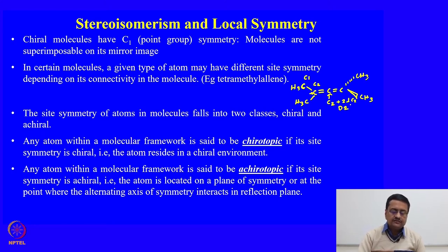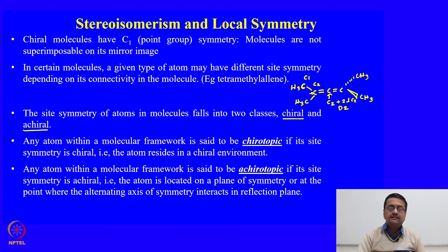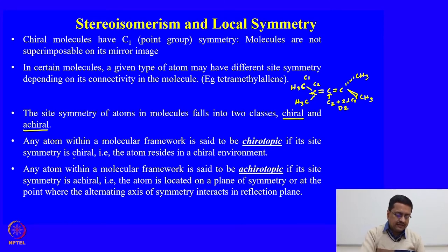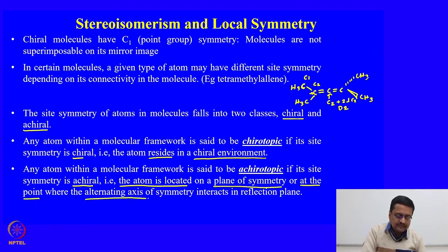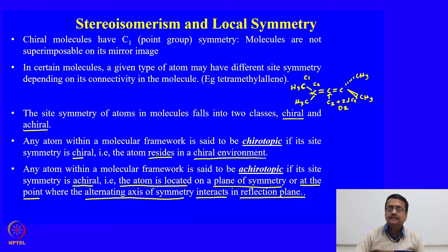The site symmetry of atoms in molecules falls into two classes: chiral and achiral. In a molecule, a site of a carbon atom can be either a chiral site or an achiral site. Any atom within a molecular framework is said to be chirotopic if its site symmetry is chiral — that is, the atom resides in a chiral environment. Any atom is said to be achirotopic if its site symmetry is achiral — that is, the atom is located on a plane of symmetry or at the point where the alternating axis of symmetry interacts in a reflection plane.